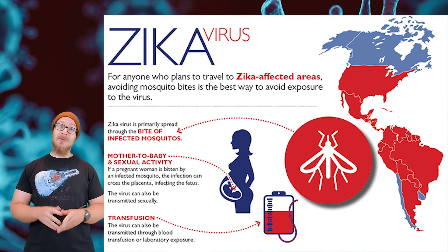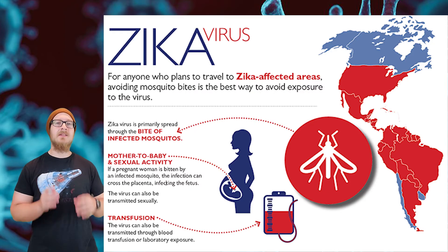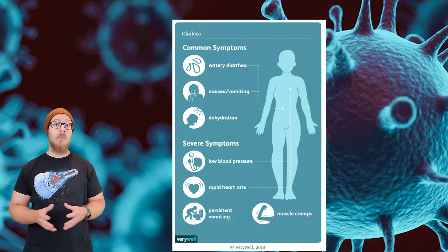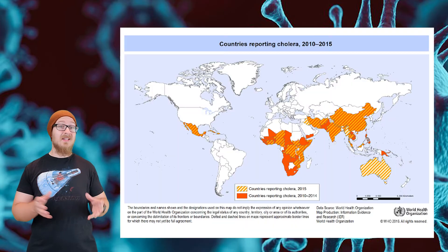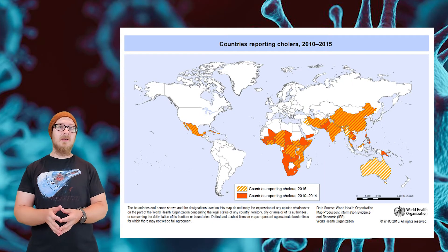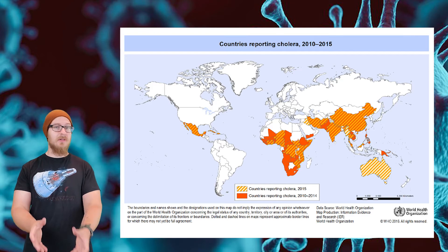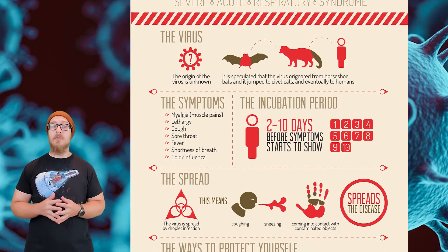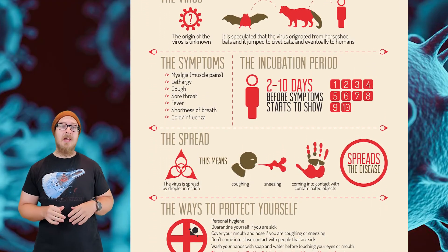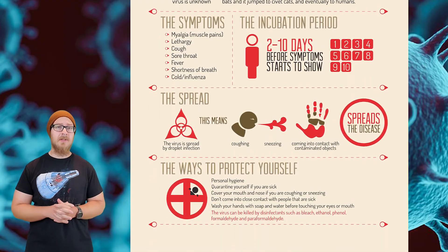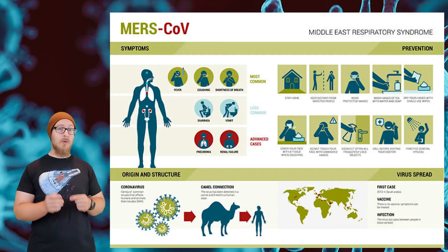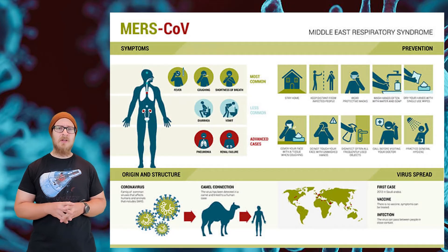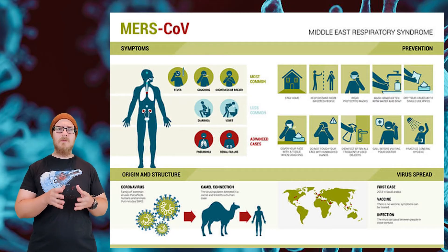Zika is a virus spread through infected mosquitoes, but Zika can also be transmitted sexually. Cholera is a bacterial disease contracted from drinking infected water — this is why water is not safe to drink in many parts of the world that don't have a reliable drinking water system. SARS, or Severe Acute Respiratory Syndrome, is a viral respiratory illness transferred from animals to humans and then spread between humans through respiratory droplets. MERS, or Middle Eastern Respiratory Syndrome, is also a viral respiratory illness spread from animals to humans. SARS and MERS are both in the coronavirus family.